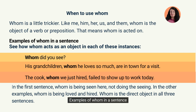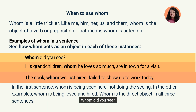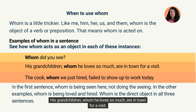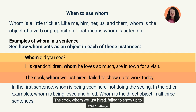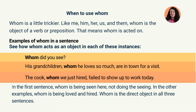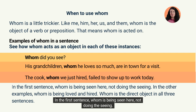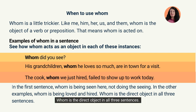Examples of whom in a sentence — see how whom acts as an object in each of these instances. Whom did you see? His grandchildren, whom he loves so much, are in town for a visit. The cook, whom we just hired, failed to show up to work today. In the first sentence, whom is being seen — not doing the seeing. In the other examples, whom is being loved and hired. Whom is the direct object in all three sentences.